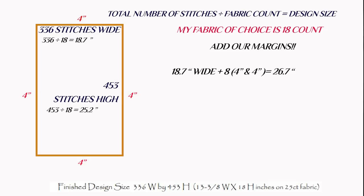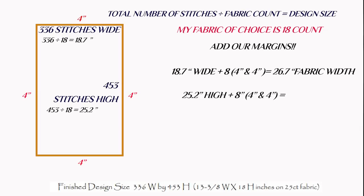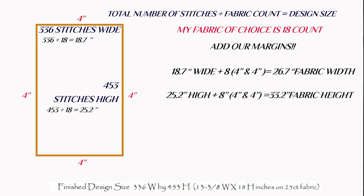Now I do exactly the same for the top and bottom. My stitched height is 25.2 inches, and again I'm doing four inches top and four inches bottom — that's eight. So 25.2 plus eight gives me 33.2 inches.